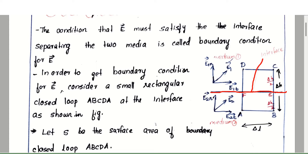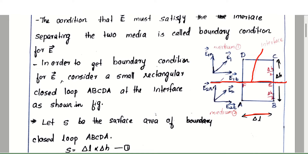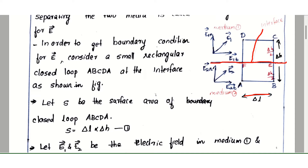Electric field E2 is at medium 2. E1 has a tangential component E1t and a normal component E1n. Similarly, E2 has a tangential component E2t and a normal component E2n. The small rectangular loop has width delta-l and height delta-h. Let S be the surface area of closed loop ABCDA; then S equals delta-l times delta-h. This is equation number 1.